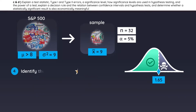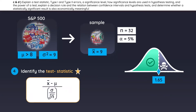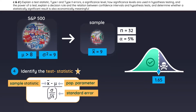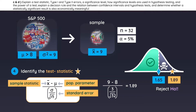The last step is to calculate the test statistic. Here is the formula, and here are the labels. Pause the video if you want to solve it on your own before checking your work. By plugging in values, we get a test statistic of 1.89. Since it is greater than 1.65, meaning that it lands in the rejection area, we will reject the null hypothesis.